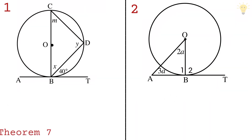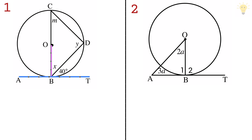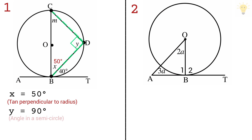Theorem 7 states that a tangent to a circle is perpendicular to the radius at the point of contact. A line drawn perpendicular to the radius at the point where it meets the circle is a tangent, making a 90 degree angle. To find x we subtract 40 from 90, giving 50 degrees. Two lines from the ends of a diameter meet at the circumference at 90 degrees, so y equals 90 degrees. Using the triangle angle sum, m equals 180 minus 90 minus 50, giving 40 degrees.